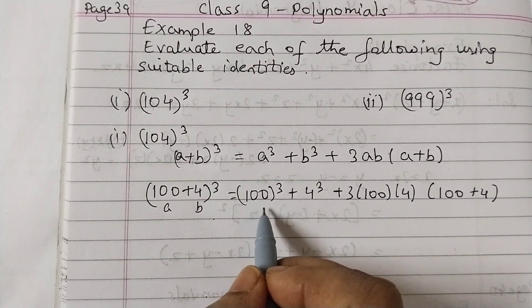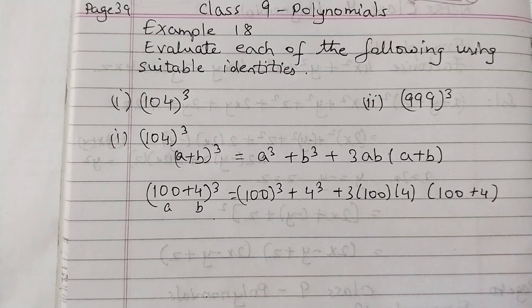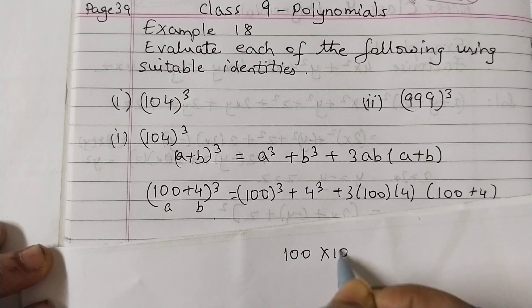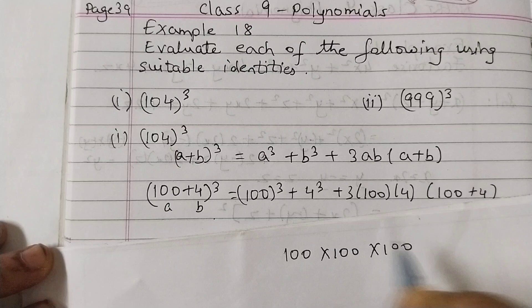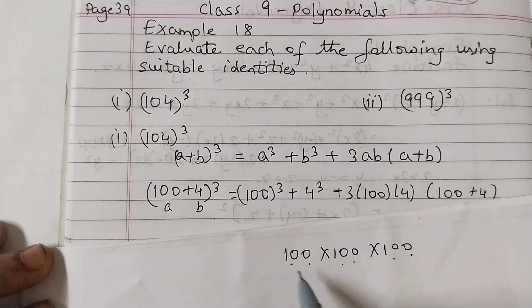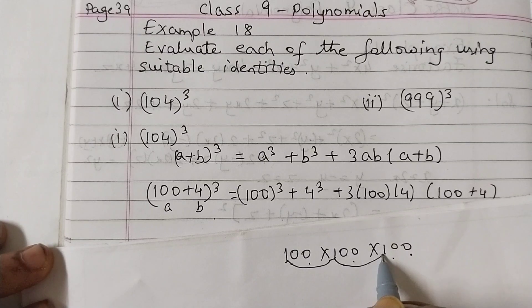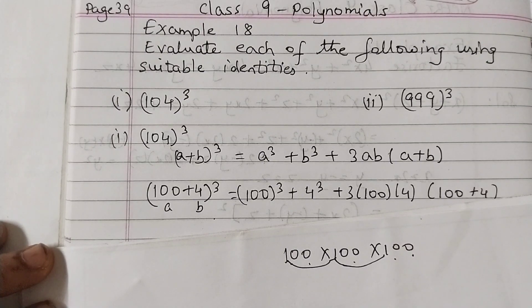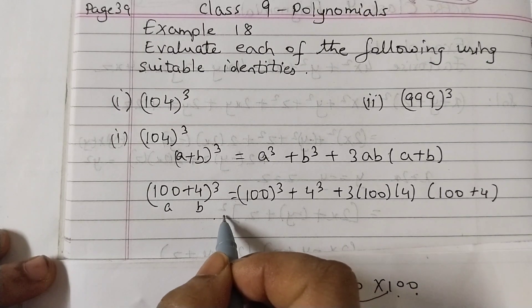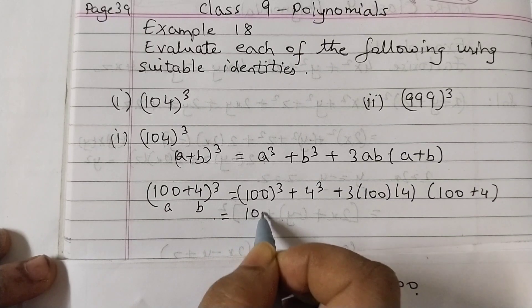100 into 100 into 100. See here, 100 into 100 into 100, one, two, three, four, five, six, we got six zeros and 1 into 1 is 1, 1 into 1 is 1. So this equals to one, two, three, four, five, six, six zeros.